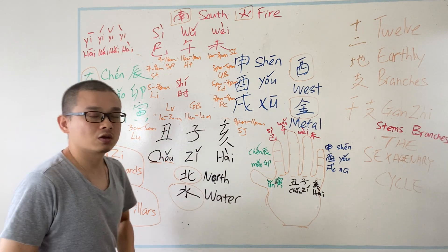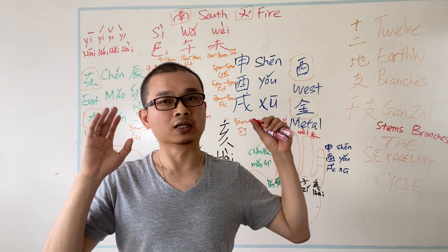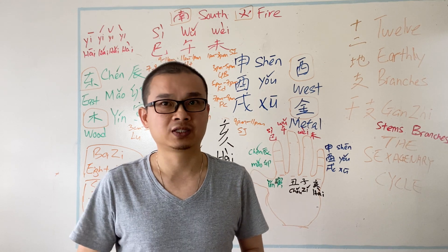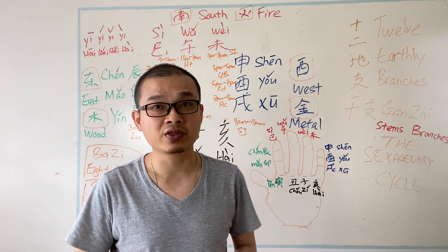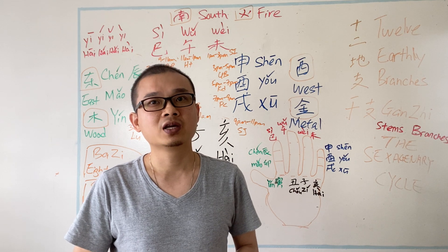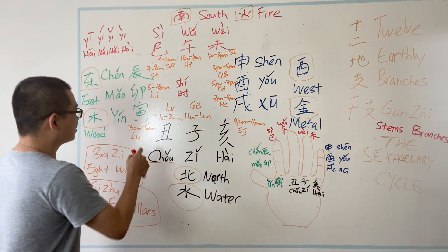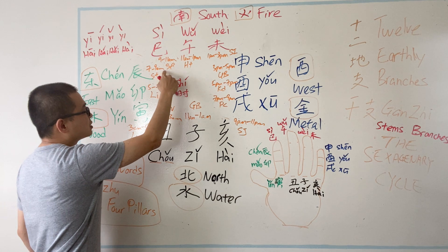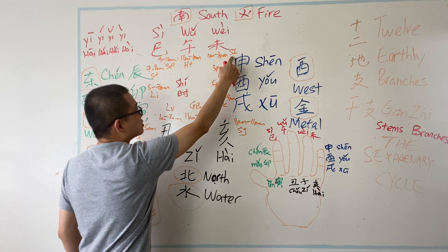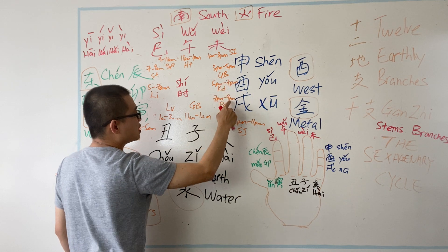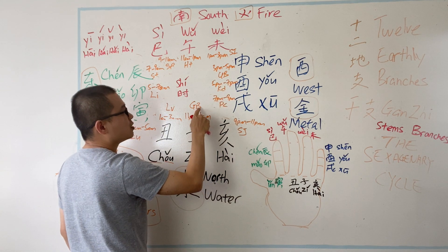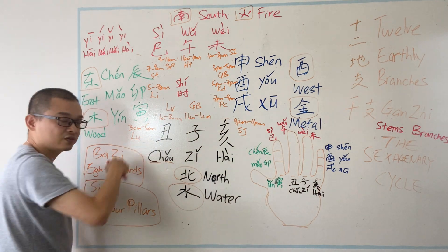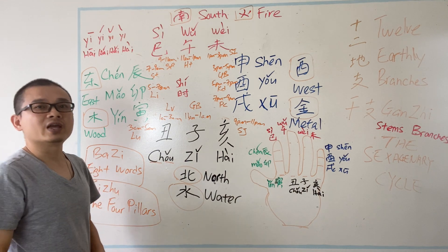If you memorize those four groups, you'll also know that in Chinese medicine when it comes to acupuncture, the Qi and blood flow starts with the Lung. Look here — it starts with Lung, then goes to Large Intestine, Stomach, Spleen, Heart, Small Intestine, Bladder, Kidney, Pericardium, Sanjiao, Gallbladder, and Liver — and it's a cycle that returns back to Lung.